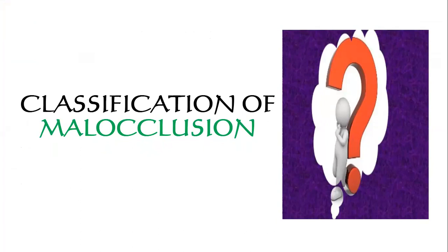Class II malocclusion is when the mesiobuccal cusp of the maxillary first permanent molar occludes in the buccal groove of the mandibular first permanent molar. Class III malocclusion is when the mesiobuccal cusp of the maxillary first permanent molar occludes in the interdental space between the upper and lower first and second permanent molars. This is the basic classification introduced by Angle.